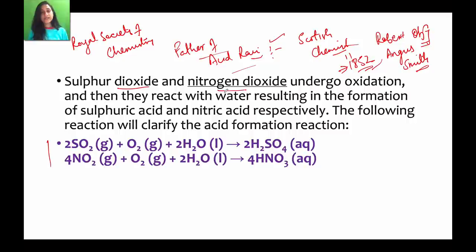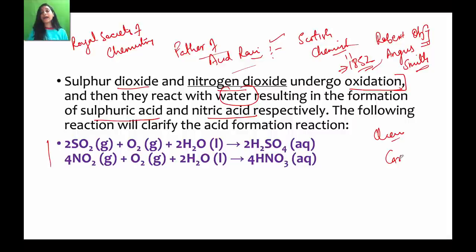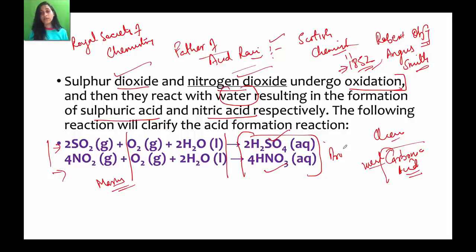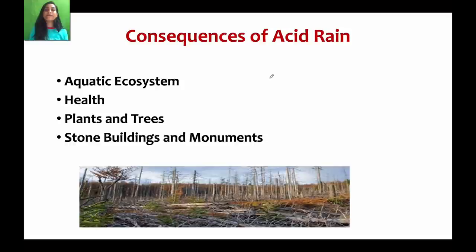When sulfur dioxide and nitrogen oxides oxidize and react with rainwater, they produce sulfuric acid and nitric acid. Compare this to carbon dioxide reacting with rainwater to form carbonic acid — carbonic acid is weak and not harmful. But sulfuric acid and nitric acid are strong acids. Acid rain finally forms when these strong acids mix with rain droplets.